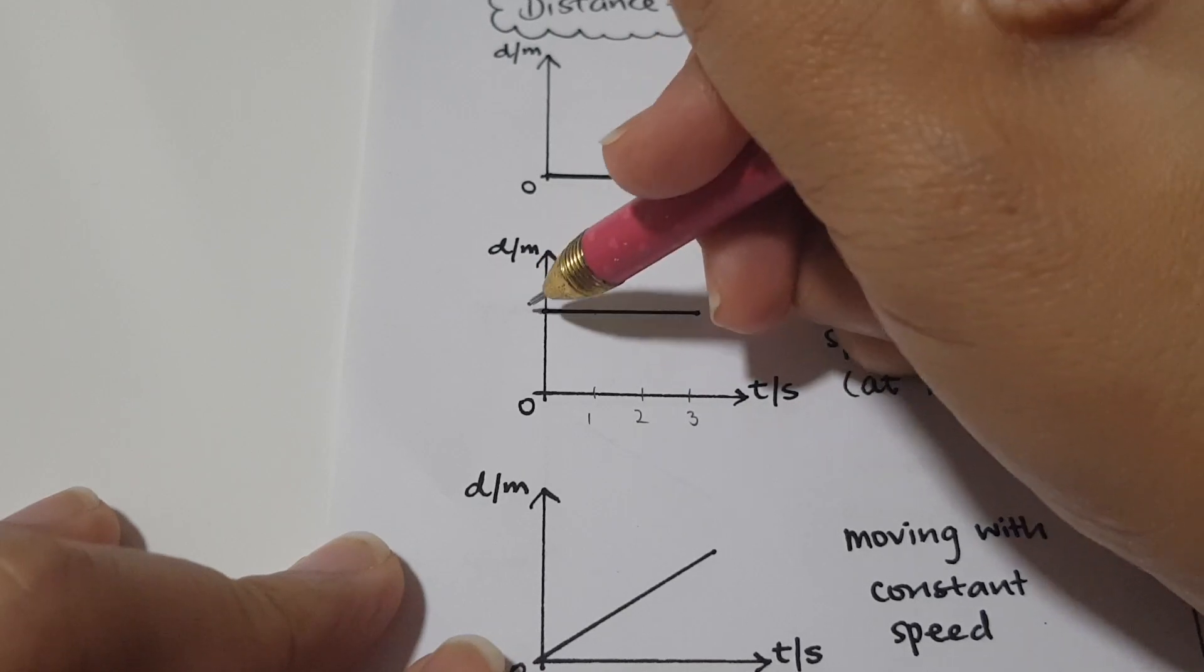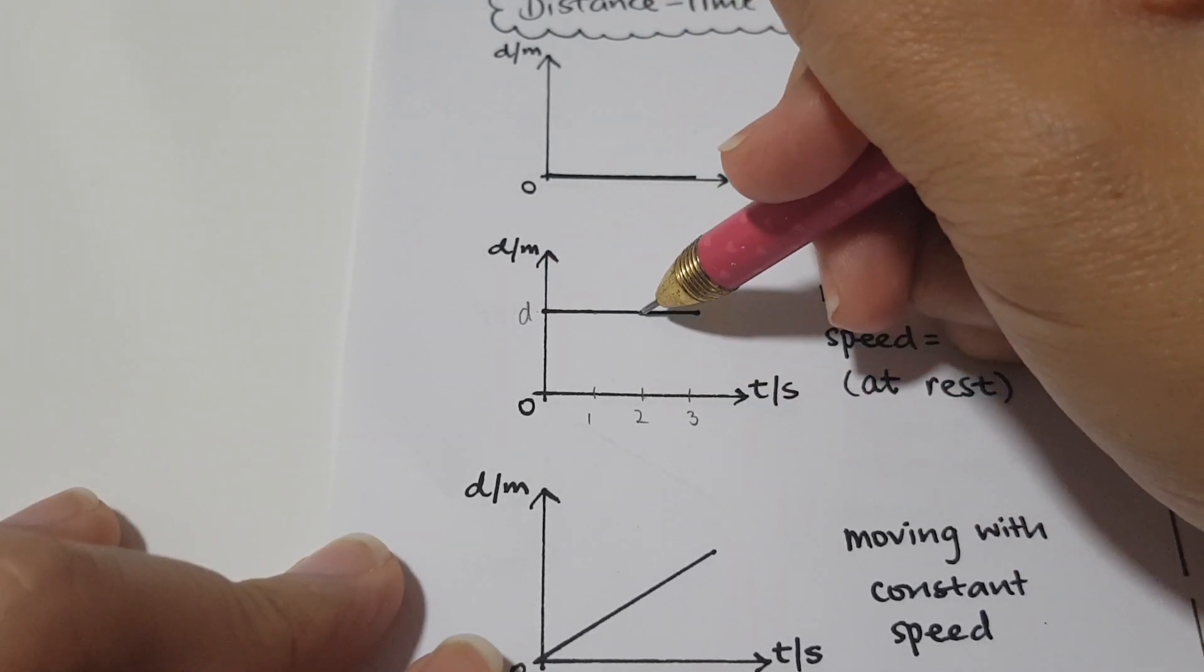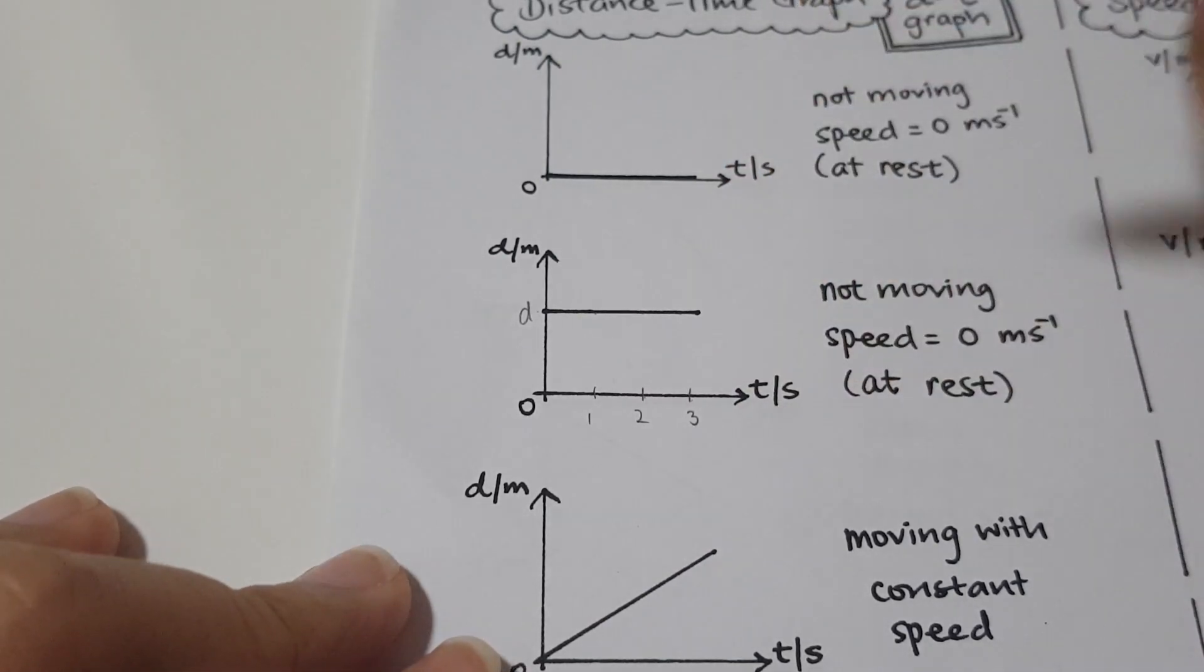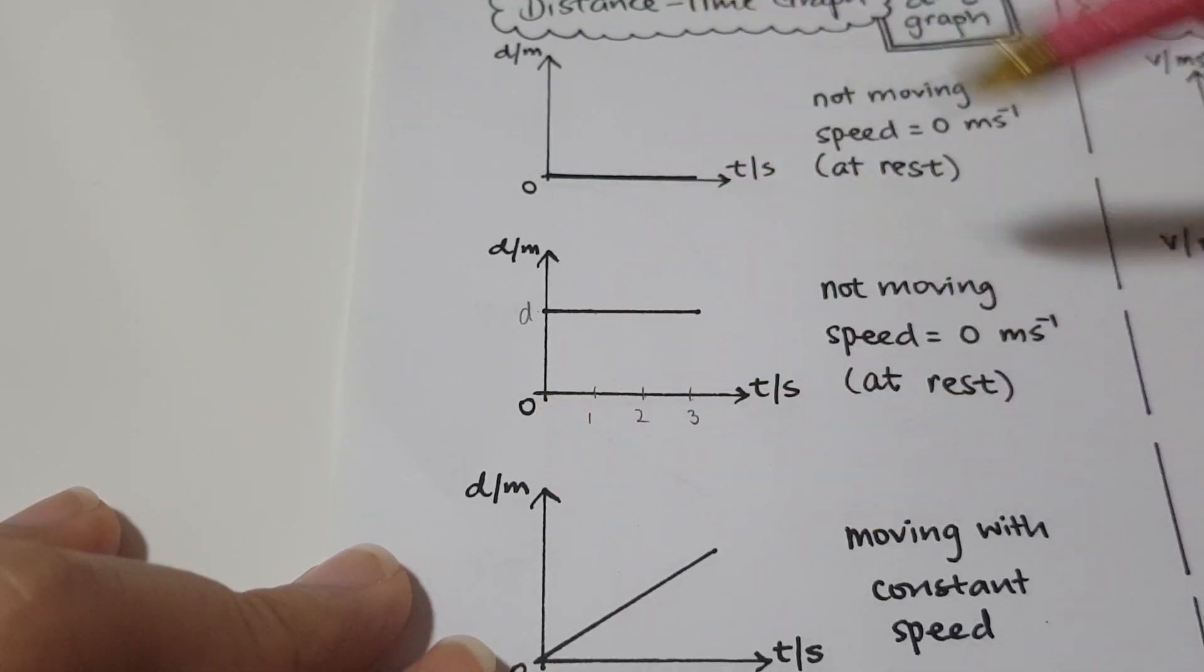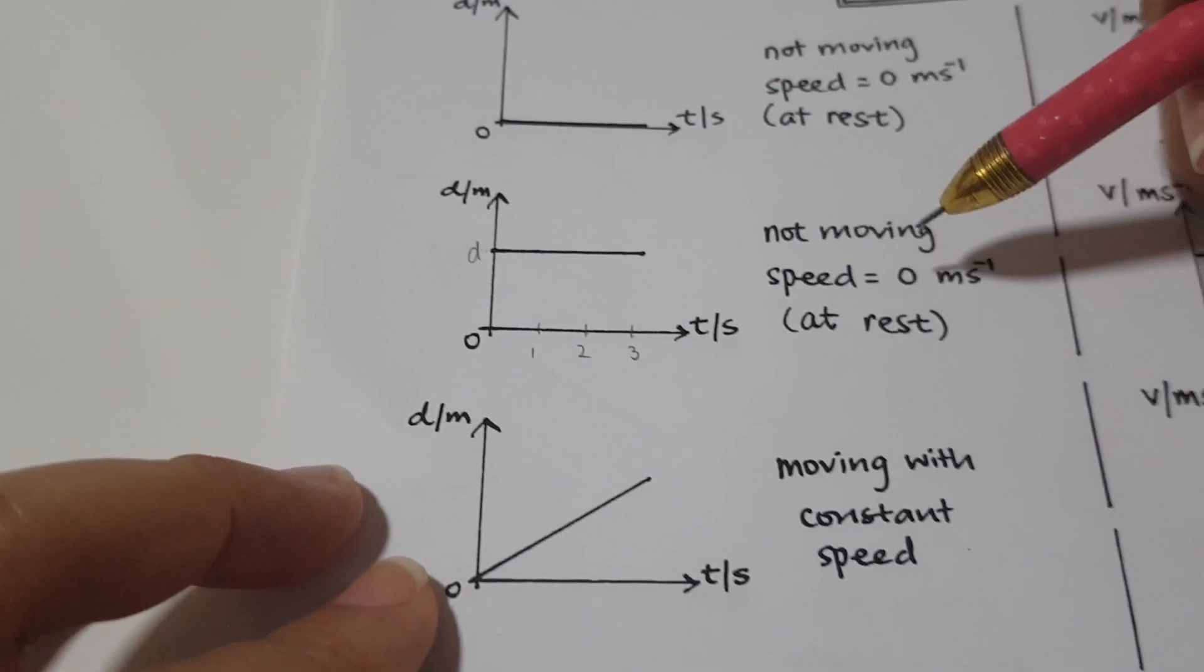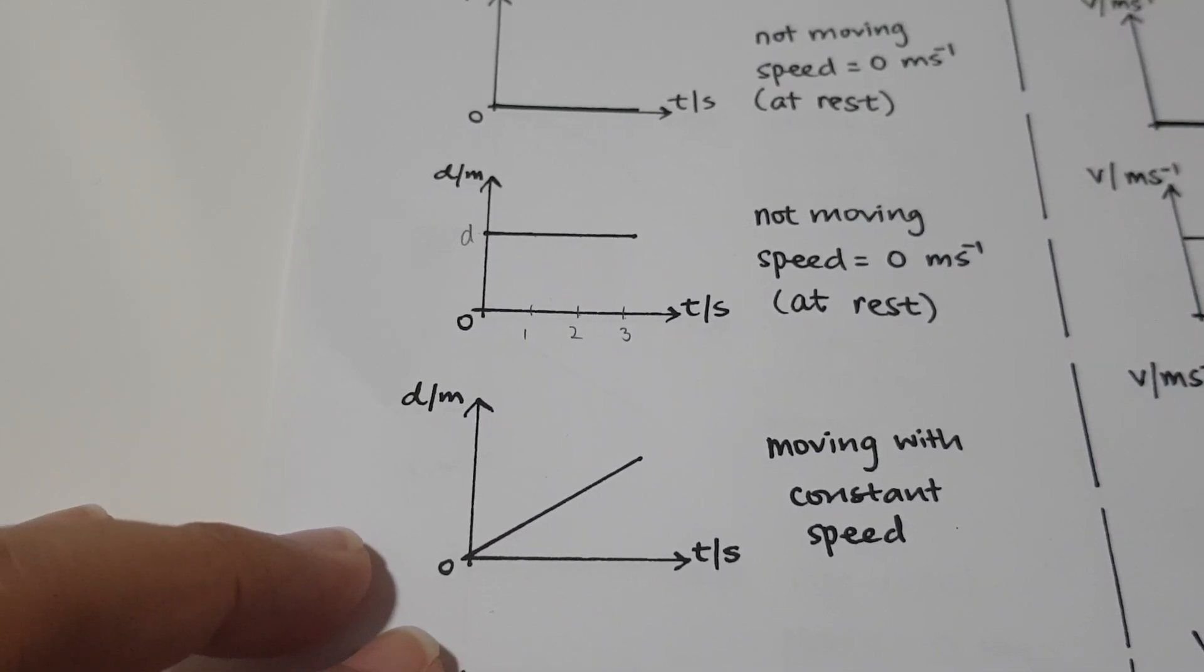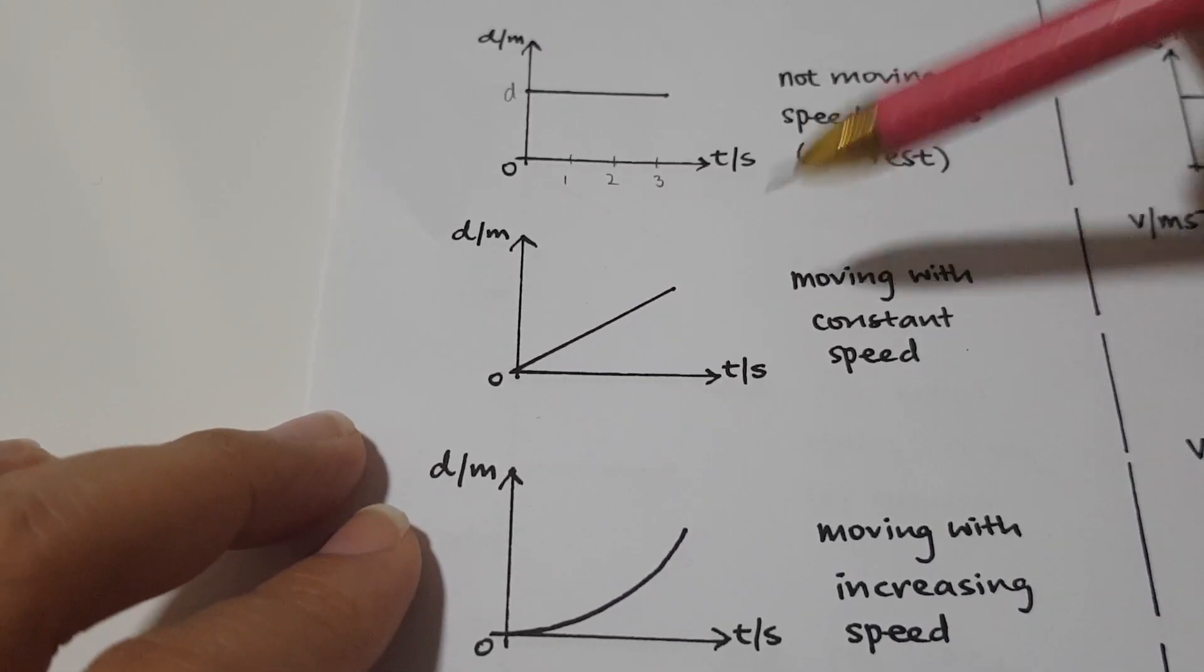Let's call this D. And at the second second, it's still at distance D meters away and the third second is still at D meters away. So it's constantly at the same point that is D meters away from the origin. And therefore it's not moving and it's at rest and speed is at 0 meters per second.